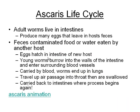The adult worms live in the intestines and produce eggs that leave in the host's feces. The feces contaminate food or water, which is eaten by another host. The eggs hatch in that new host and the larvae bury themselves into the intestine walls, entering surrounding blood vessels. Carried by the blood, the worm ends up in the lungs, then travels out through the air passage and throat, and is swallowed to begin the process again.